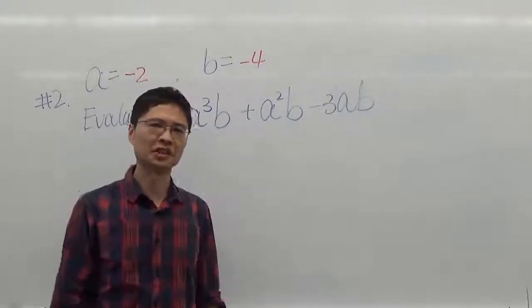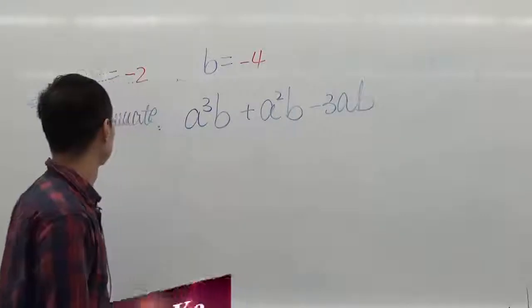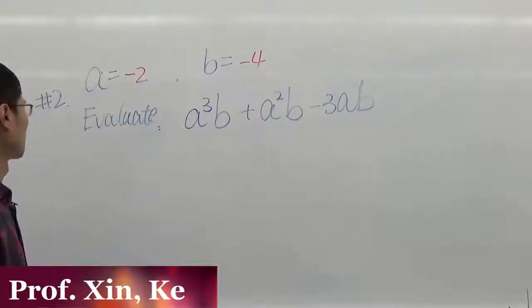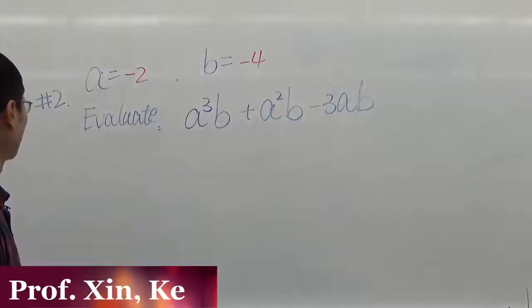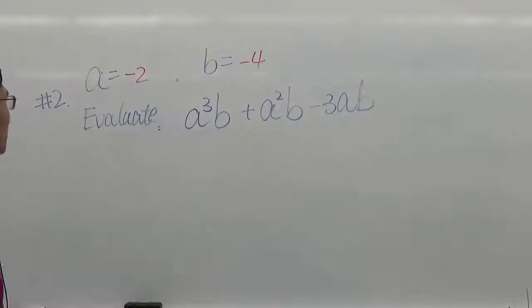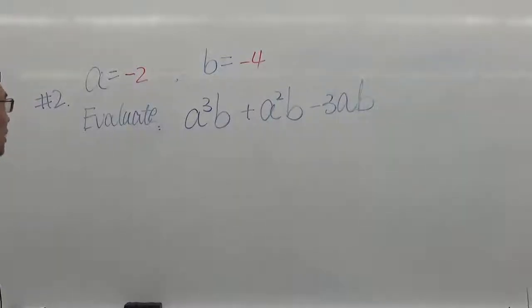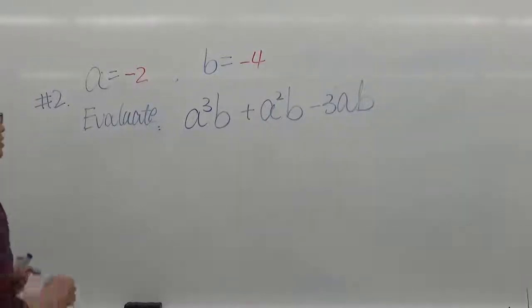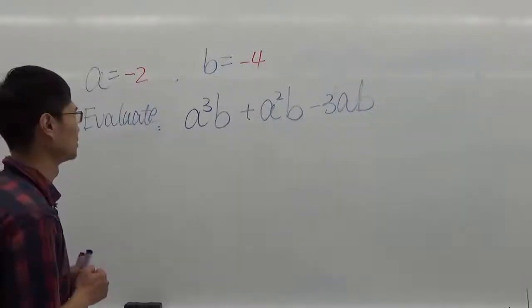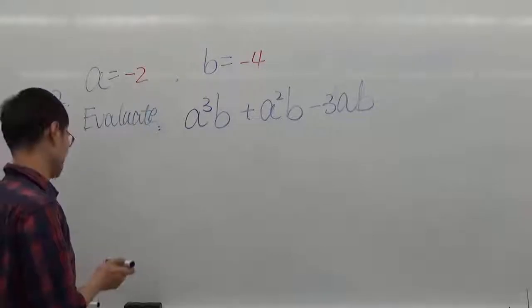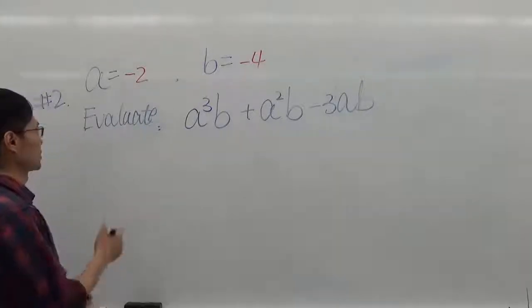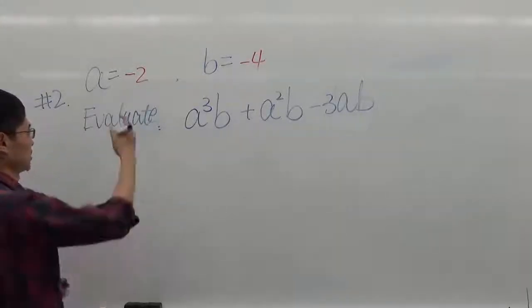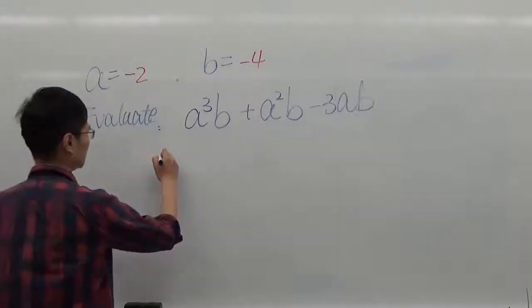Let's look at the second example. In this second example, we have A and B both negative. When we substitute, we have to be very careful because we're going to have a lot of parentheses. So let's first substitute out the numbers we have.